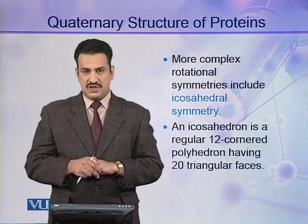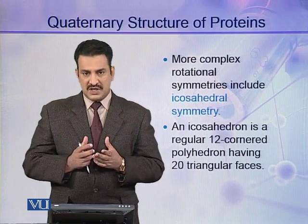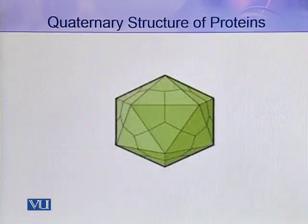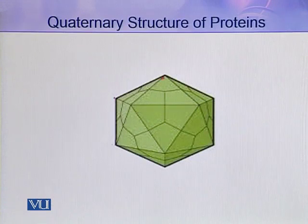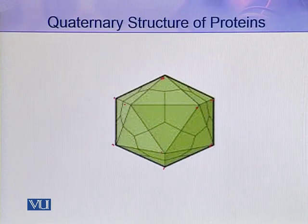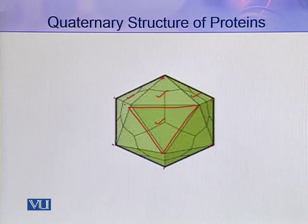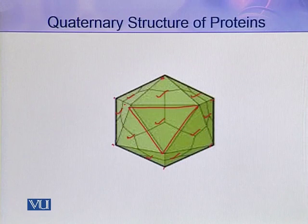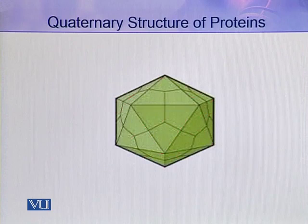A more complex rotational symmetry is icosahedral symmetry, in which an icosahedron is formed. An icosahedron is a regular 12-cornered polyhedron with 20 triangular faces. As you can see in this icosahedron, 12 corners and 20 triangular faces are present. All of these are actually protomers arranged in this fashion to make an icosahedron. Such symmetries are present in bacteriophages, as seen in the head of a bacteriophage.